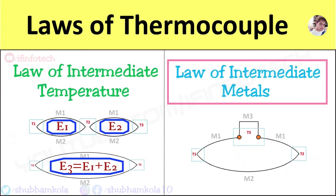The next law is the law of intermediate metals. It states that the introduction of a third metal into a thermocouple circuit will have no effect on the emf generated, as long as the junctions of the third metal with the thermocouple metals are at the same temperature.